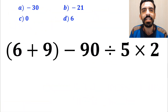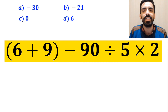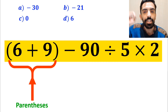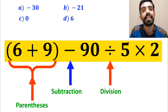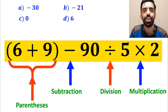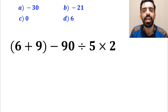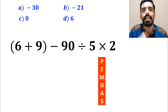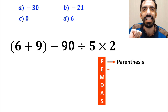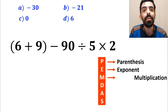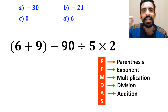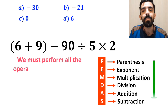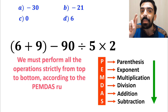Now let me explain step by step how to solve this expression correctly. As you can see on the screen, in this expression, first we have parenthesis, then a subtraction sign, followed by a division, and finally a multiplication. To solve this question, we need to follow the PEMDAS rule step by step. In this rule, P stands for parenthesis, E stands for exponent, M stands for multiplication, D stands for division, A stands for addition, and S stands for subtraction. We must perform all the operations strictly from top to bottom according to the PEMDAS rule.